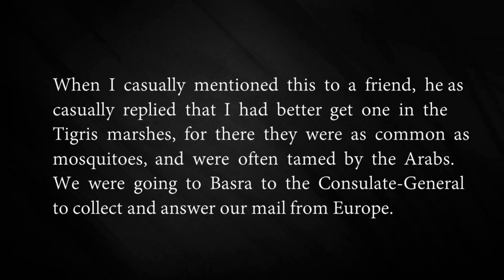When he casually mentioned this to a friend, the friend casually replied that he should get one from the Tigris marshes, for there they were as common as mosquitoes. The Tigris is a river in Iraq, and the marshy area has a lot of muddy, watery land with lots of plants. Otters were plentiful there, and the Arabs liked to tame or domesticate them.